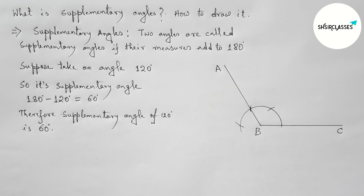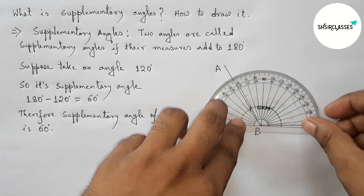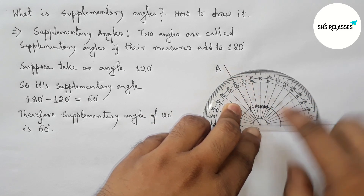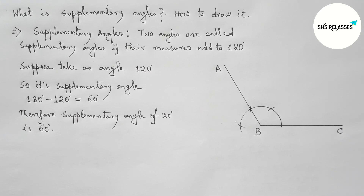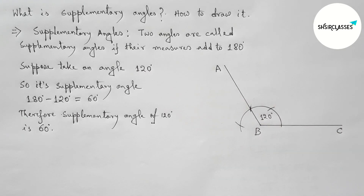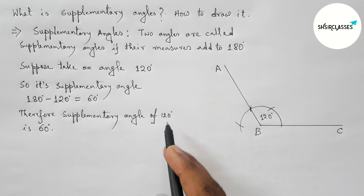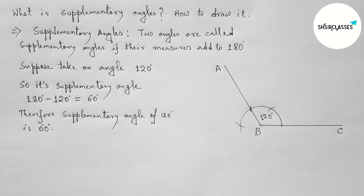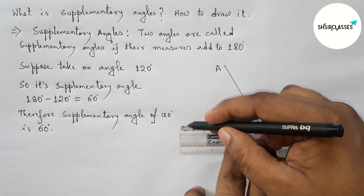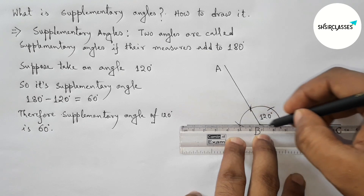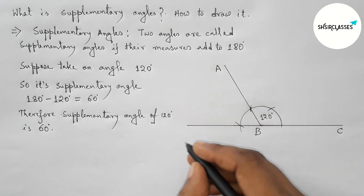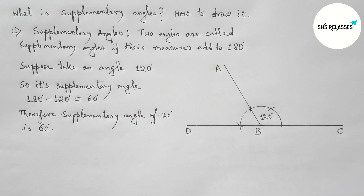Join the intersection to get the 120 degree angle, and label the ray as point A. Verify with a protractor — this is perfectly a 120 degree angle, so angle ABC equals 120 degrees. For the supplementary 60 degree angle, simply extend this line and mark point D.